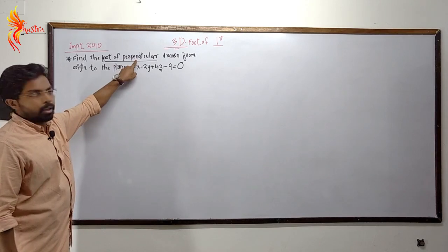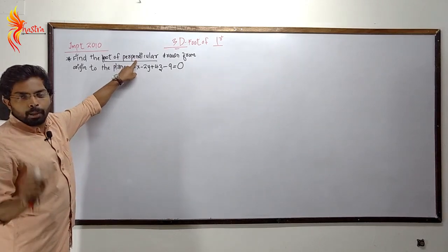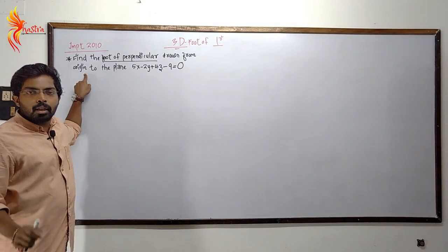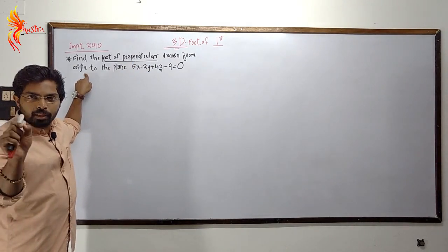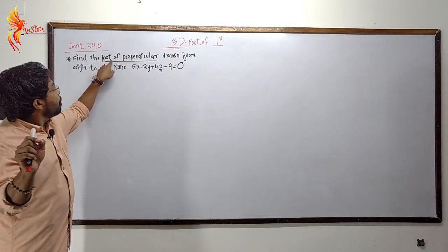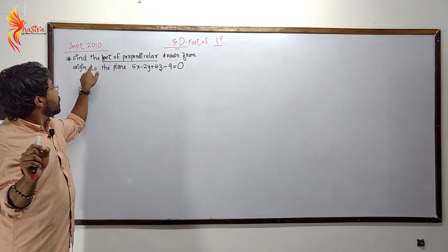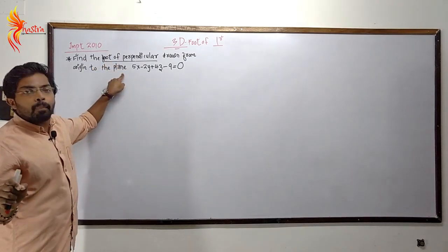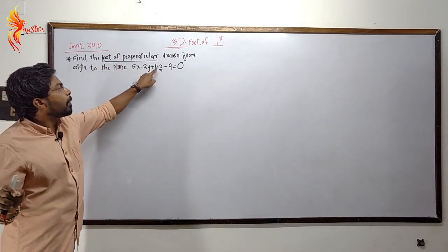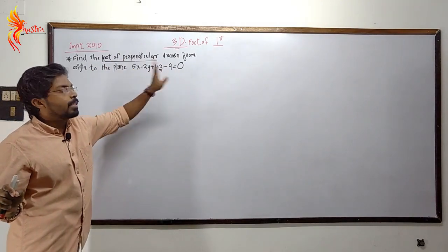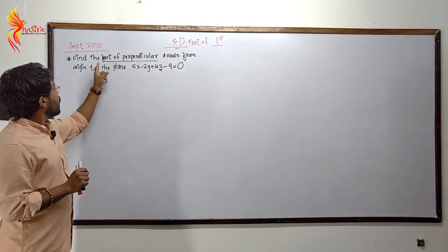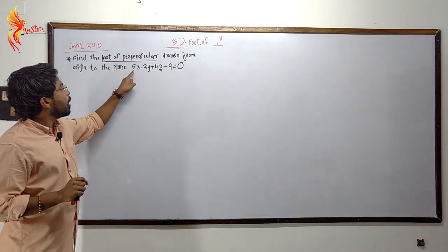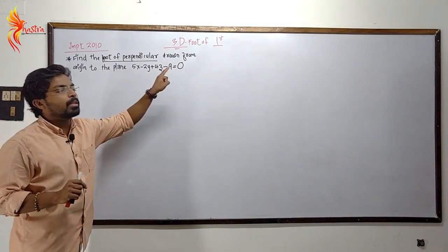Find the foot of perpendicular drawn from the origin to the plane 5x minus 2y plus 4z minus 9 equals zero.